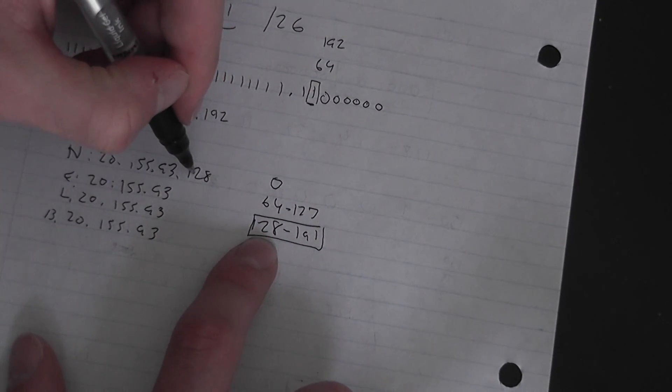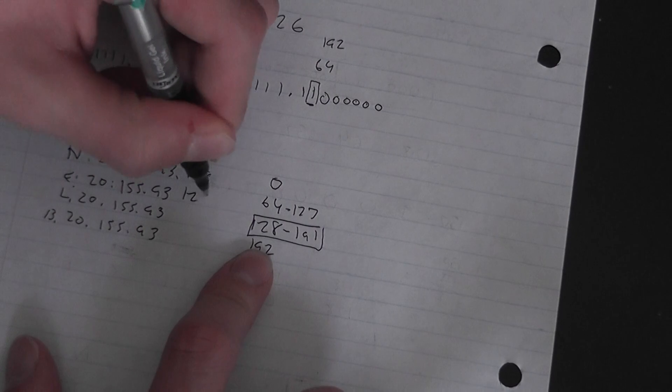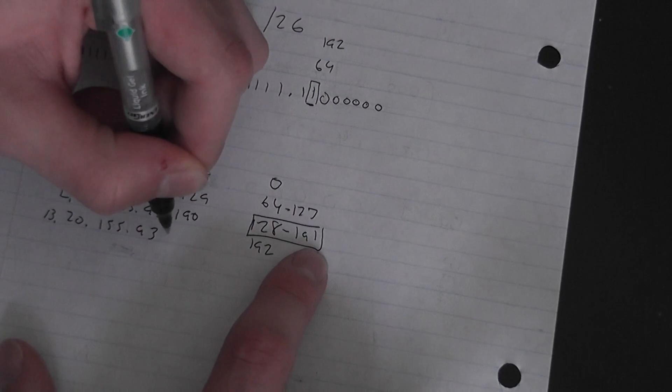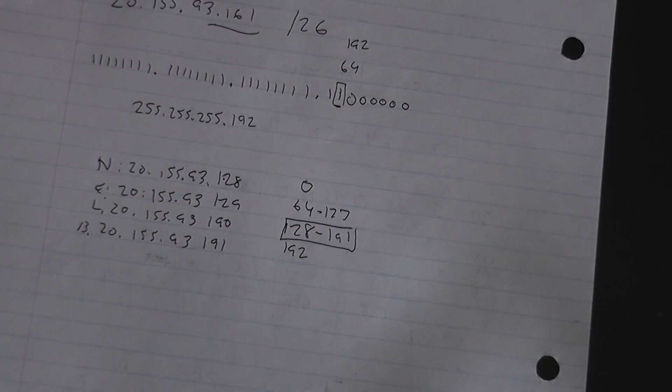Your first one can't be 128 because it's in the last octet, so it's 129. Your last usable is 190, and your broadcast is 191 because it's your last one. If you have any questions just comment below and I will get to you guys.